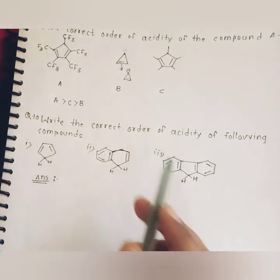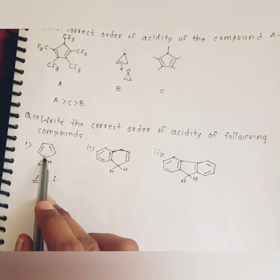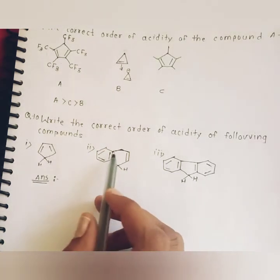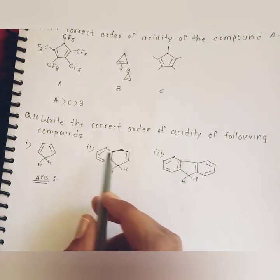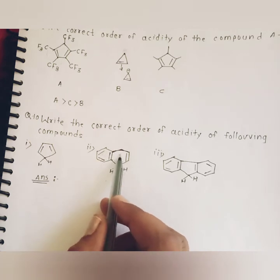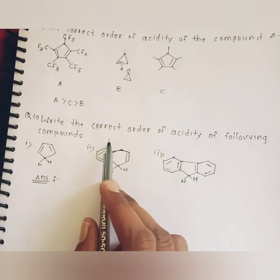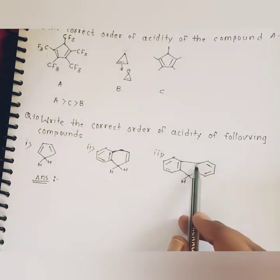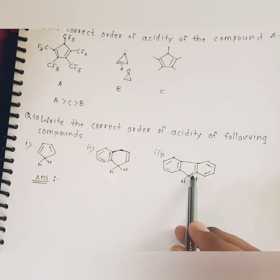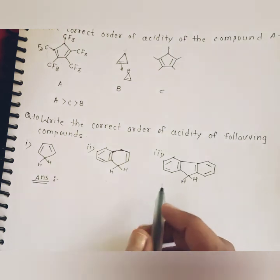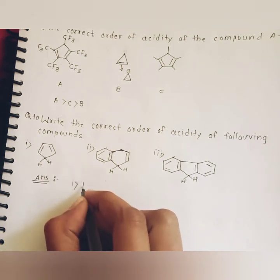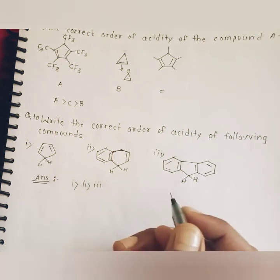Question ten: write the correct order of acidity of the following compounds. The first compound is the most acidic because deprotonation results in aromatization. In the second compound, the adjacent benzene ring imparts partial aromaticity to the cyclopentadienyl ring, decreasing its aromaticity. In the third compound, two benzene rings impart aromaticity to the cyclopentadienyl ring, decreasing its aromaticity further. Therefore, the acidity order is: 1st is more acidic than 2nd, and 3rd is the least acidic.